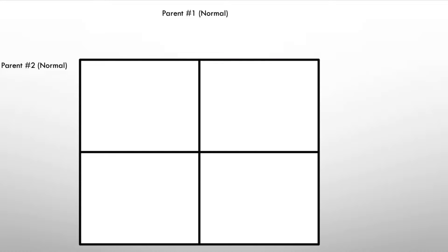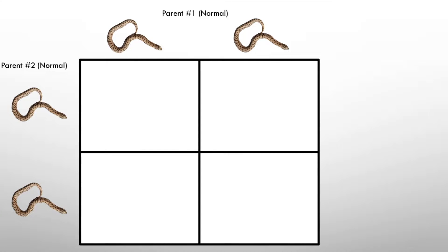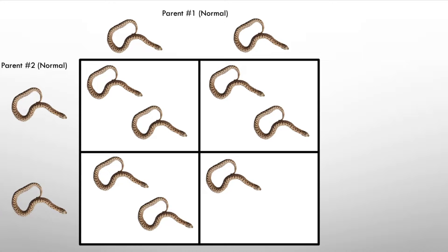Now let's go into a Punnett square showing what you can get when you breed two parents. For this dominant trait example, we'll use the wild type normal gene. If parent one has two copies of the normal gene and parent two also has two copies of the normal gene, all four boxes result in a normal — so all babies come out normal, 100%.